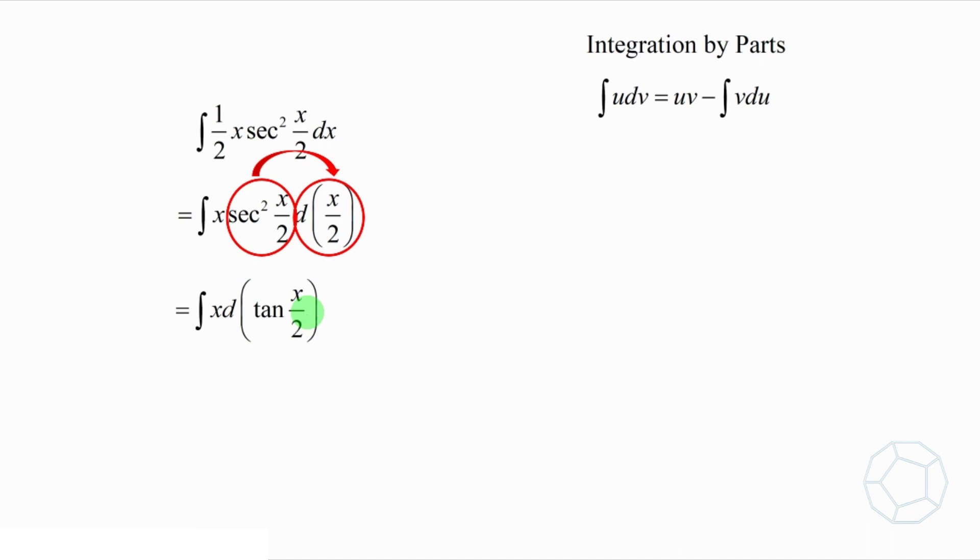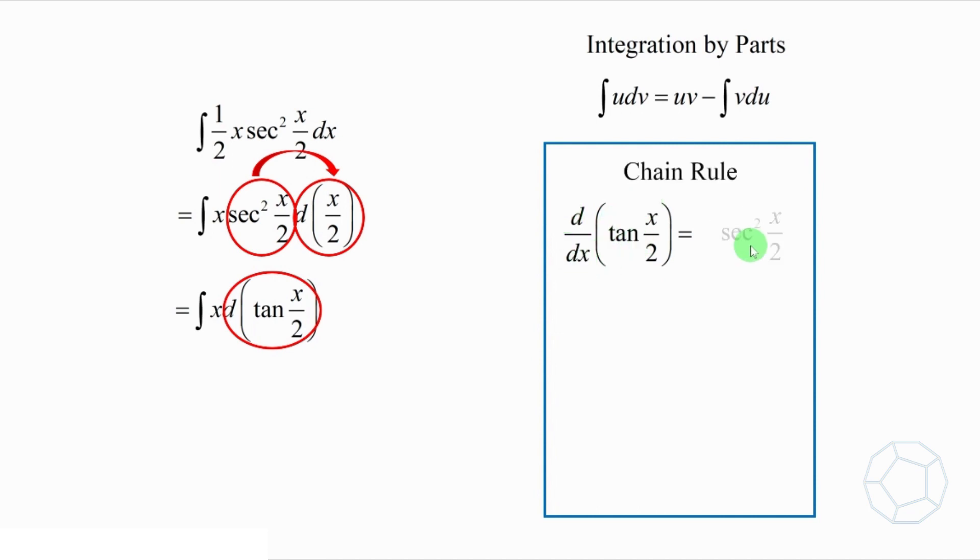Wait, are you telling me to integrate some terms only? Why can you do that? Let me explain in more details. Consider the d(tan x over 2). By chain rule, we have sec² x over 2 times 1 over 2. Therefore, the bracket tan x over 2, this differential, is equal to 1 over 2 sec² x over 2 dx.